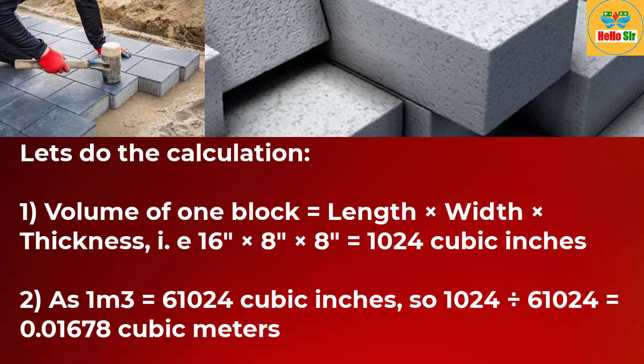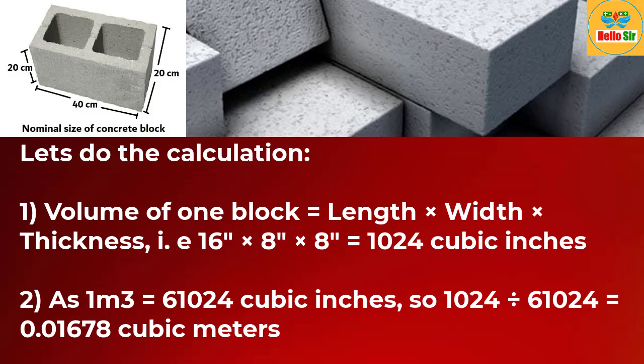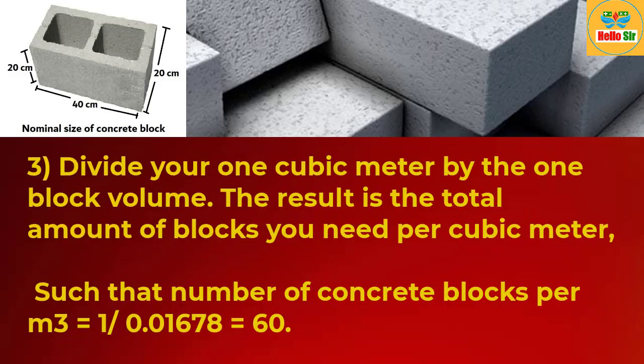As you know, one cubic meter is equal to 61,024 cubic inches. So to convert 1024 cubic inches into cubic meters, divide 1024 by 61,024, which gives 0.01678 cubic meters. For the final calculation, to find the number of concrete blocks required per cubic meter, divide one cubic meter by the volume of one block.